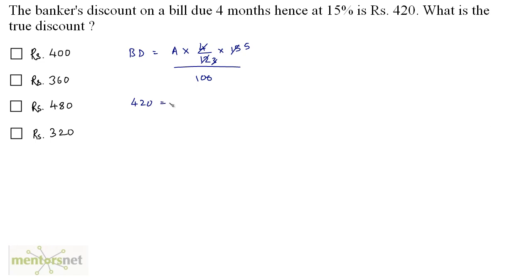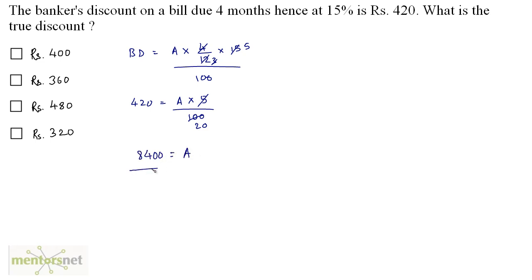The banker's discount is given as Rs. 420. This equals the amount A times 5/100. So 5 × 20 = 100, and 420 × 20 = Rs. 8400, which is the amount.